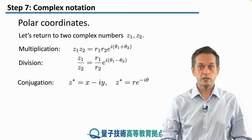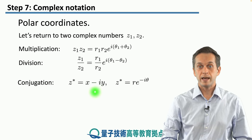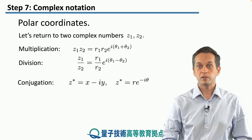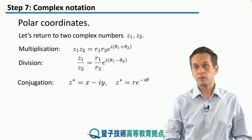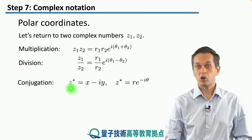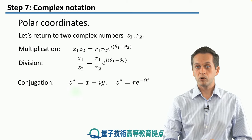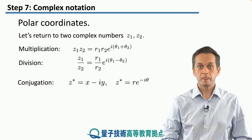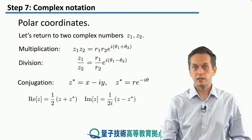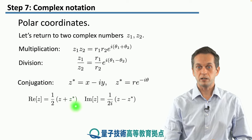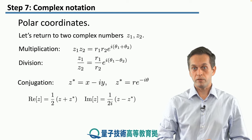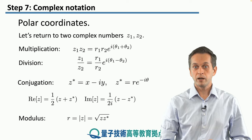We also have to talk about the conjugation of a complex number, which simply switches the sign in front of every i. So x plus iy becomes x minus iy, and we denote this operation by a star — z star is the complex conjugate of z. In polar coordinates, r times e to the i theta becomes r times e to the minus i theta. Using conjugation, the real part of z equals (z plus z star) divided by 2, while (z minus z star) divided by 2i gives the imaginary part. The modulus r can be obtained by multiplying z with its conjugate and taking the square root.